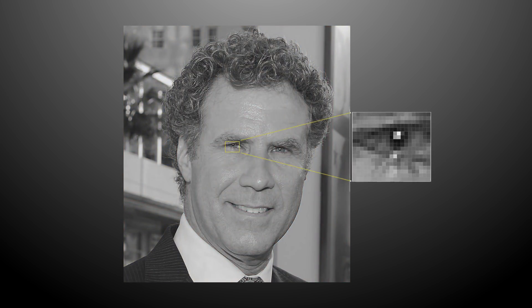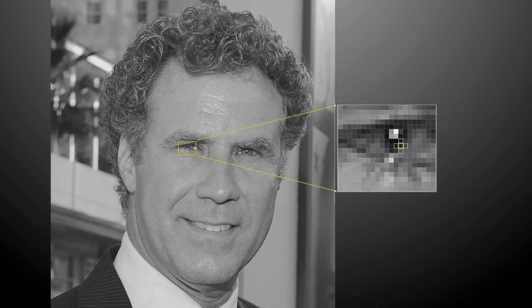It starts by making our image black and white to simplify it. We don't need color data to find faces. Then it looks at every single pixel in the image one at a time. For every pixel it looks at the pixels directly surrounding it. The goal is to figure out how dark the current pixel is compared to the pixels directly surrounding it. Then it draws an arrow showing in which direction the image is getting darker. Once it does this process for every single pixel in the image, we'll end up with every pixel being replaced by an arrow. These arrows show the flow from light to dark across the entire image.